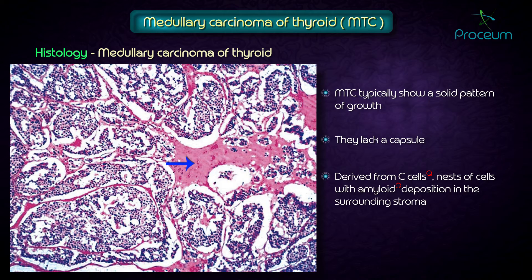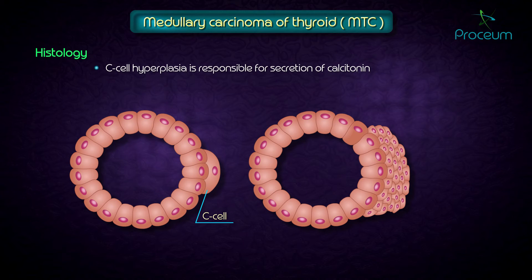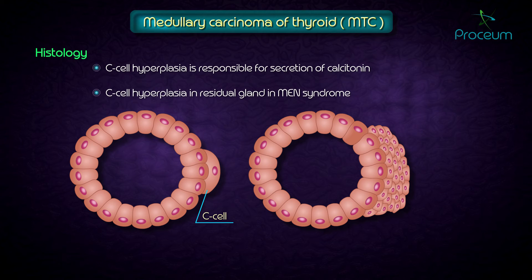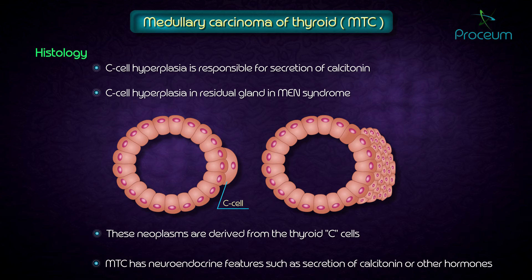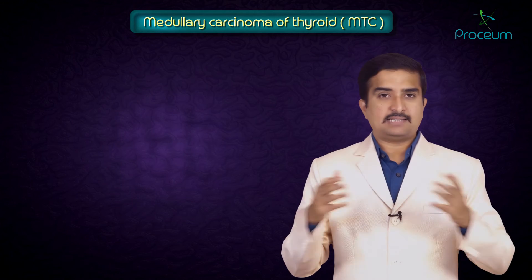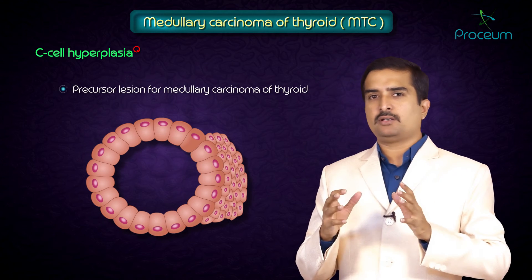MTC, derived from C cells, shows nests of cells with amyloid deposition in the surrounding stroma. The amyloid is composed of altered calcitonin secreted by the tumor cells, as C cell hyperplasia is responsible for calcitonin secretion. C cell hyperplasia is typically seen in the residual gland in MEN syndrome. These neoplasms can have neuroendocrine features such as secretion of calcitonin as well as other hormones.